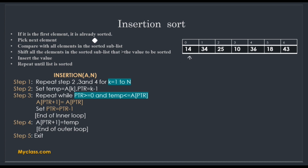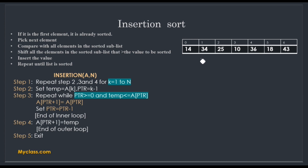Now let's look at the insertion sort algorithm. Start with the first element — it is already considered sorted, forming our initial sorted sub-list; the remaining elements form the unsorted sub-list. Pick the next element and compare it with all elements in the sorted sub-list. Shift all elements in the sorted sub-list that are greater than the picked element, find the appropriate place, and insert the picked value there.